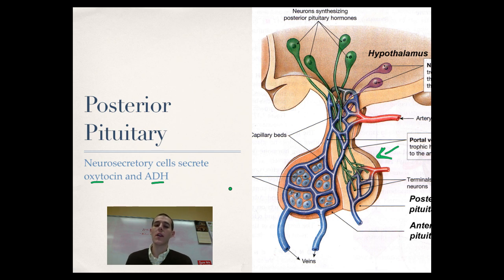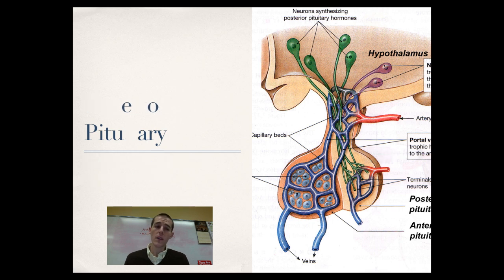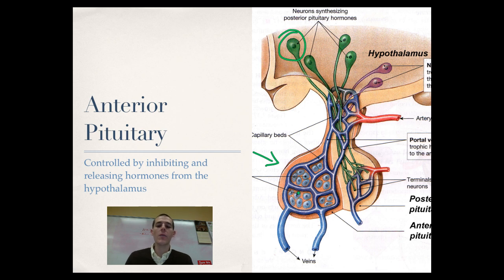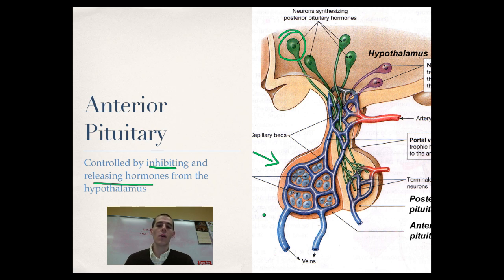The posterior pituitary receives signals directly from the nervous system, which is different from the anterior pituitary. The anterior pituitary doesn't have any neurosecretory cells hooked to it — those go to the posterior pituitary. Instead, the anterior pituitary is controlled by inhibiting and releasing hormones from the hypothalamus. It is capable of producing and sending out many different hormones that work on all different parts of the body, but whether it releases a hormone is up to the hypothalamus.